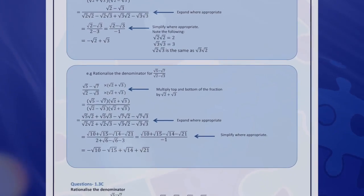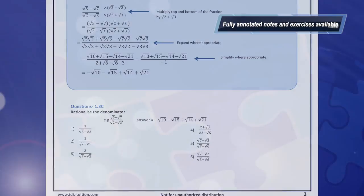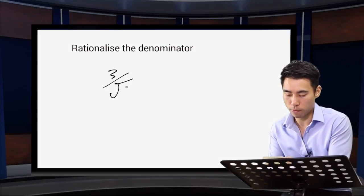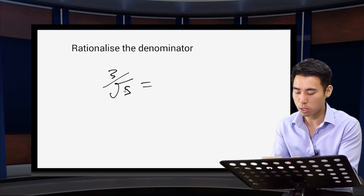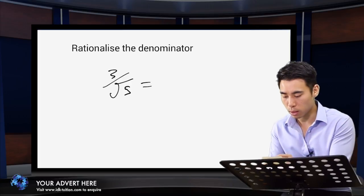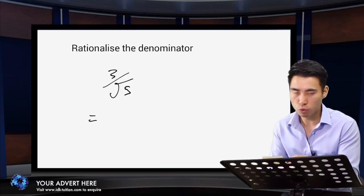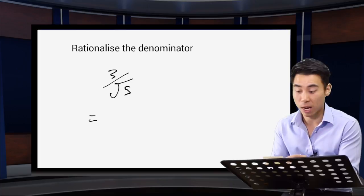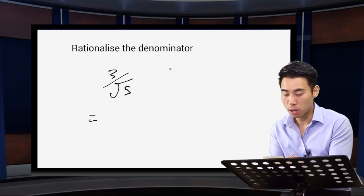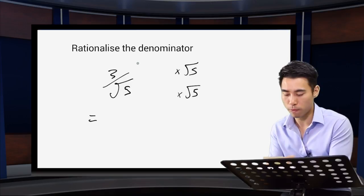Let's take a look at our first example. If we have 3 over root 5, we want to rationalise the denominator. At the moment, that denominator is a surd — it's not a rational number. In order to rationalise it where the denominator is just a surd by itself, we multiply top and bottom of the fraction by whatever the surd is on the bottom. So in this case, we multiply top and bottom by root 5.